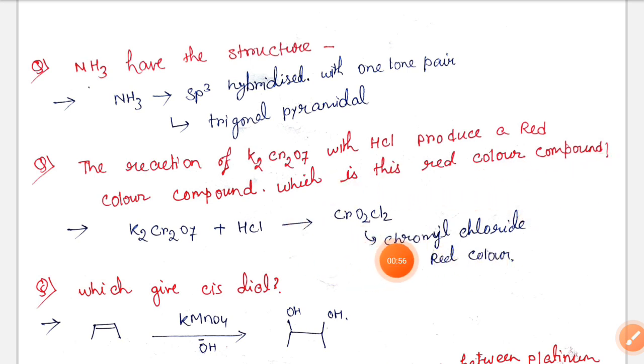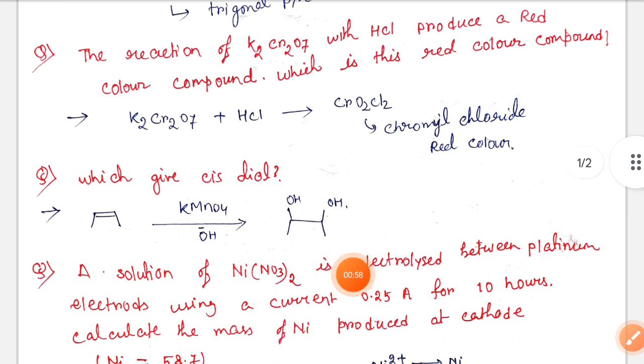Next, which gives cis diol? There are four options and the reagents are this, but in this case the correct answer is KMnO4/OH-. In this case we have cis diol.